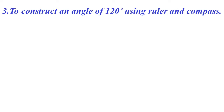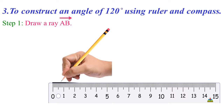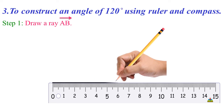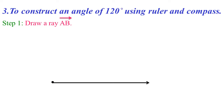Coming to the third problem: To construct an angle of 120 degrees using ruler and compass. Step 1: Draw a ray AB using a ruler.